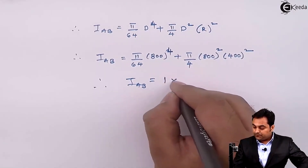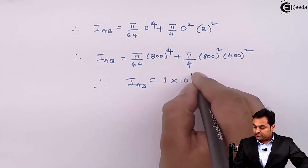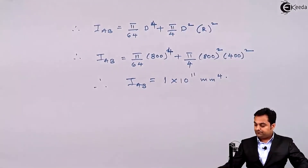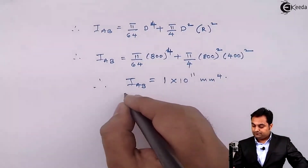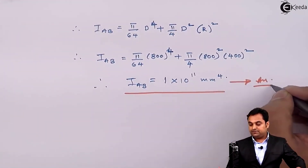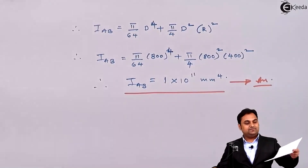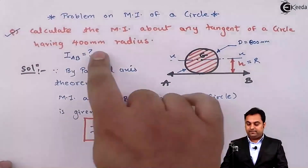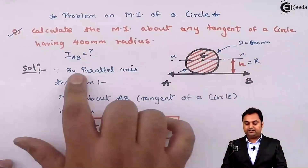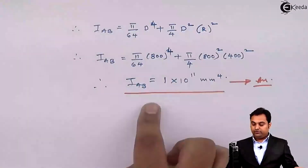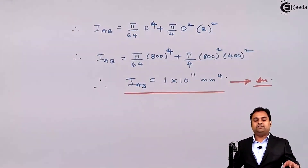Finally, I_AB comes out to be 1 × 10¹¹ mm⁴. So as we have seen, when asked to calculate the MI about any tangent of the given circle, we have found the answer. With this, we complete the question.